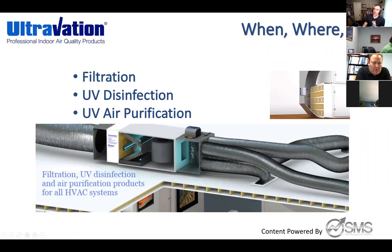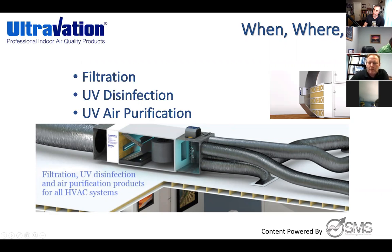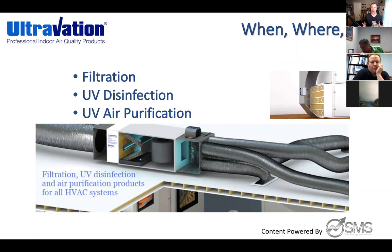There are three main areas under the when, where, why: filtration, UV disinfection, and UV air purification. Up in the upper right corner is a mock-up of our Orion unit — that's our ionization technology. Ionization has actually been around longer than UV. It fell to the wayside, UV came in, and now ionization is making a comeback. I'll talk a little about that so you understand the differences and how they're being put out there in the market right now.